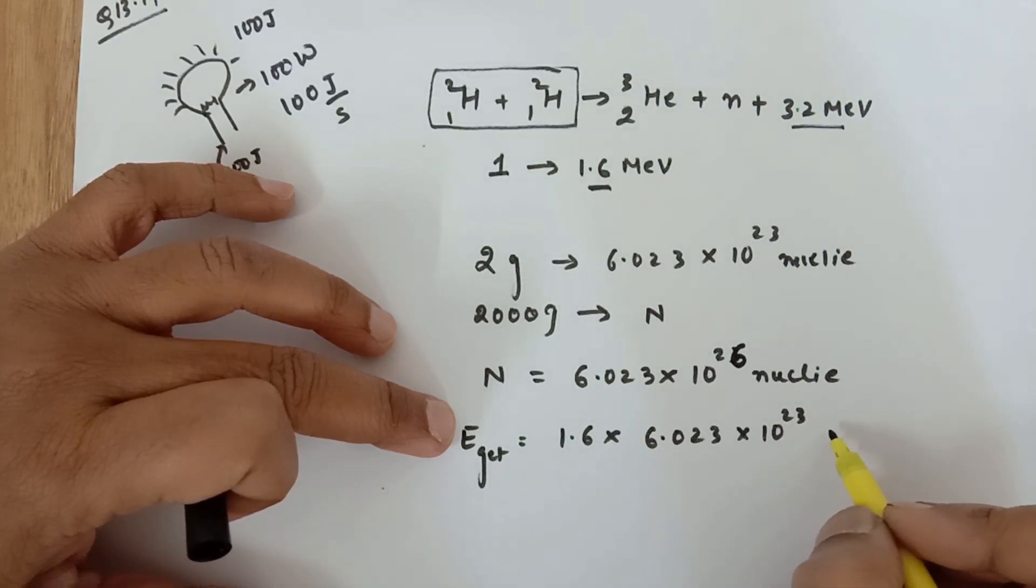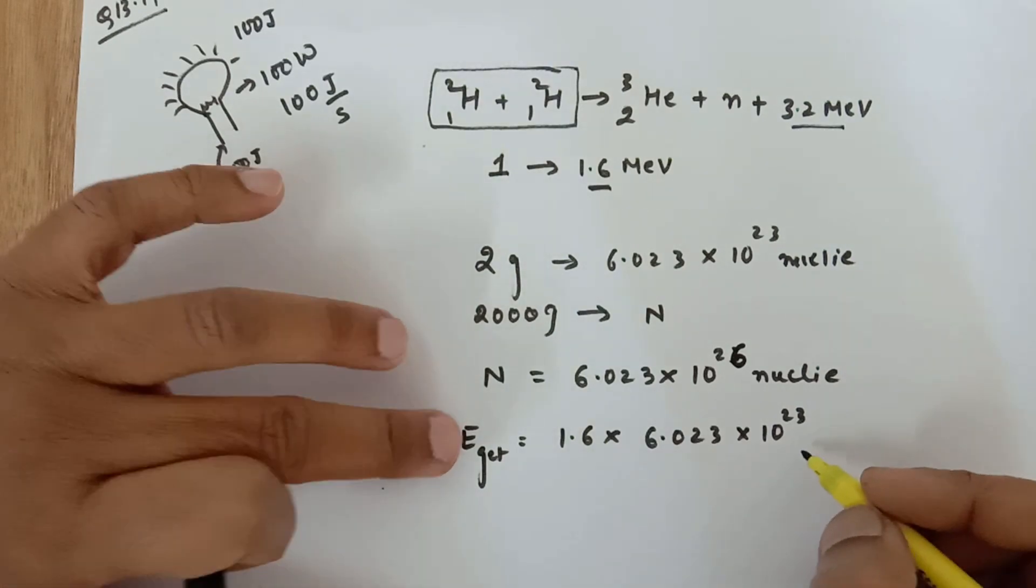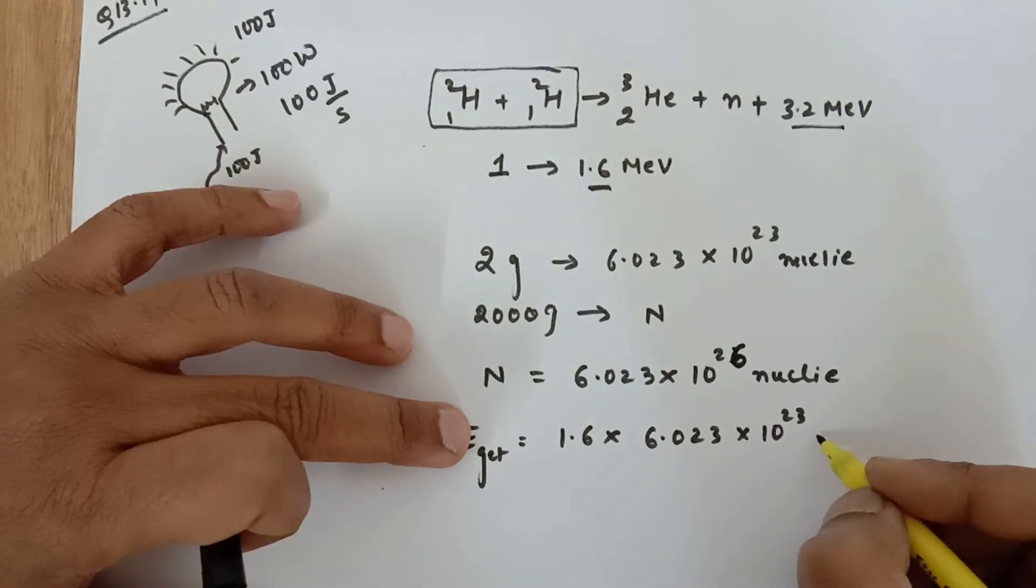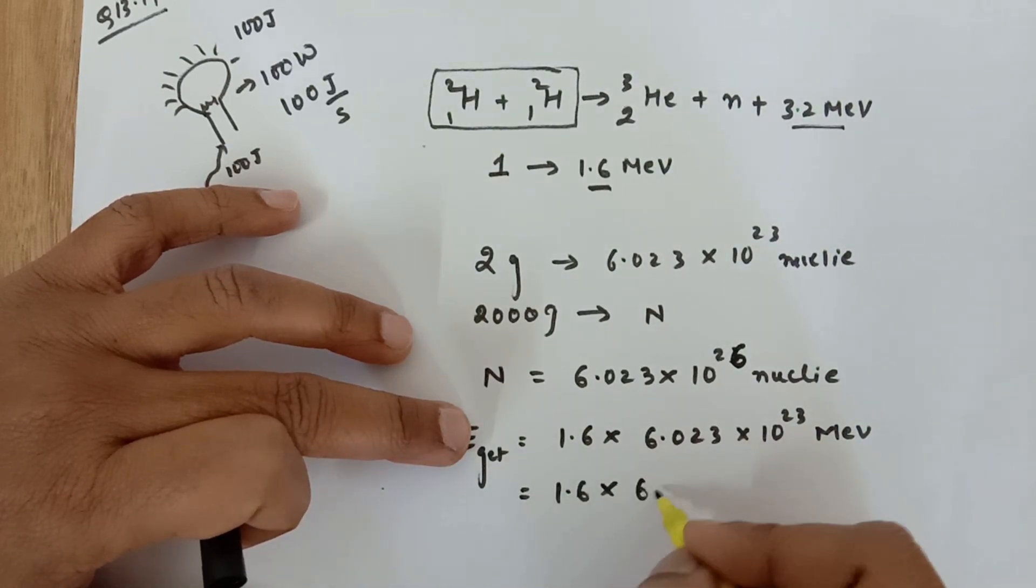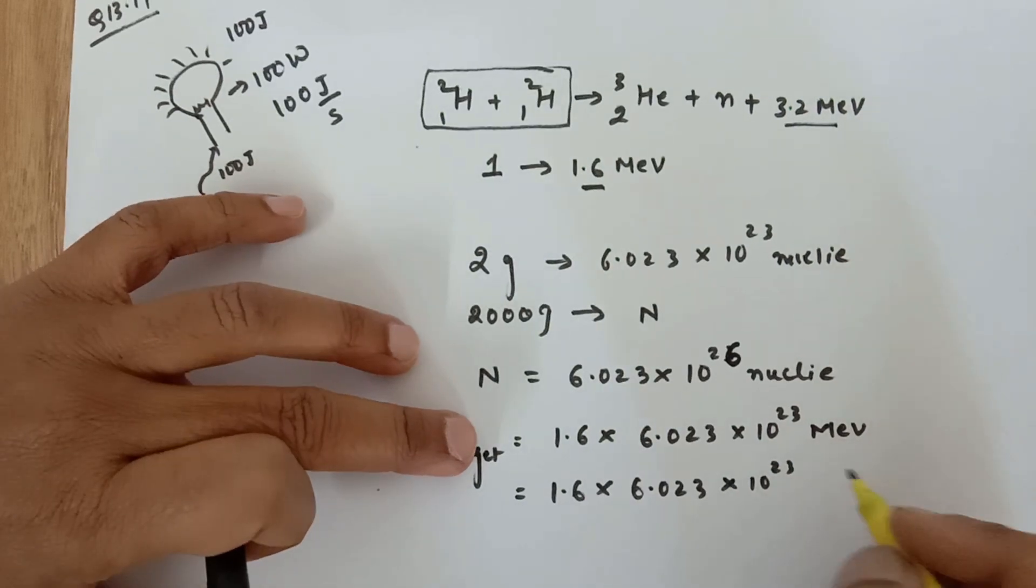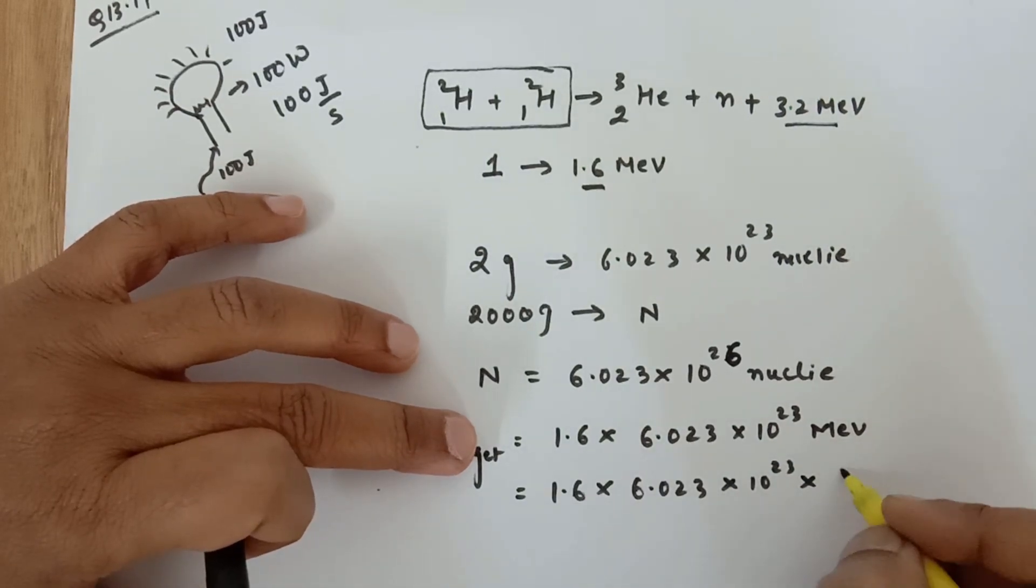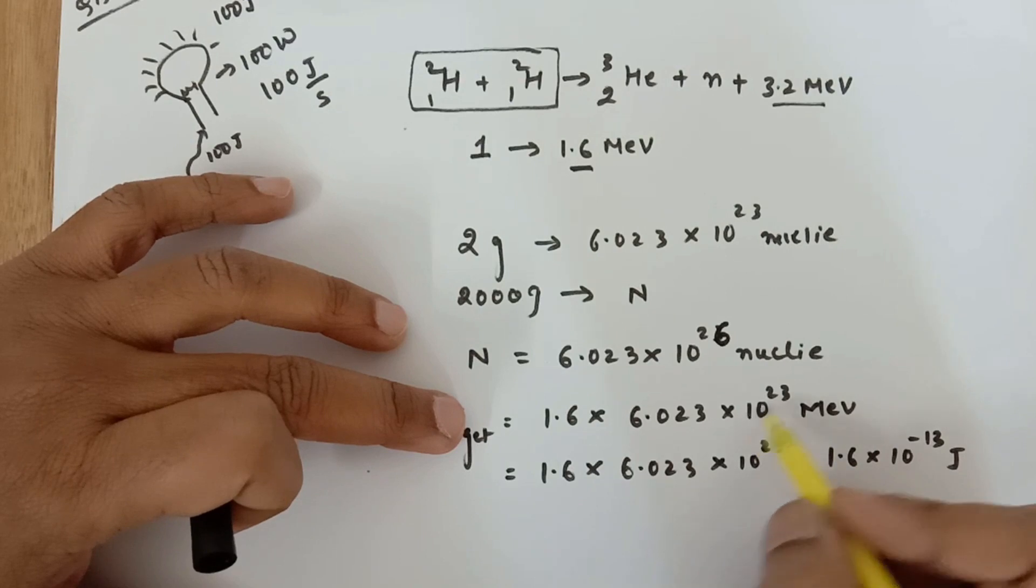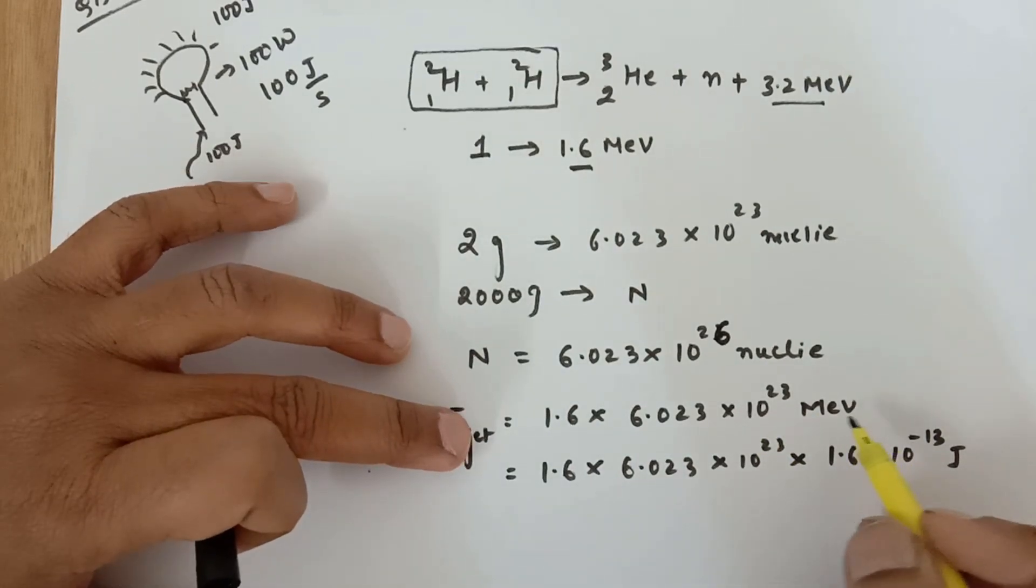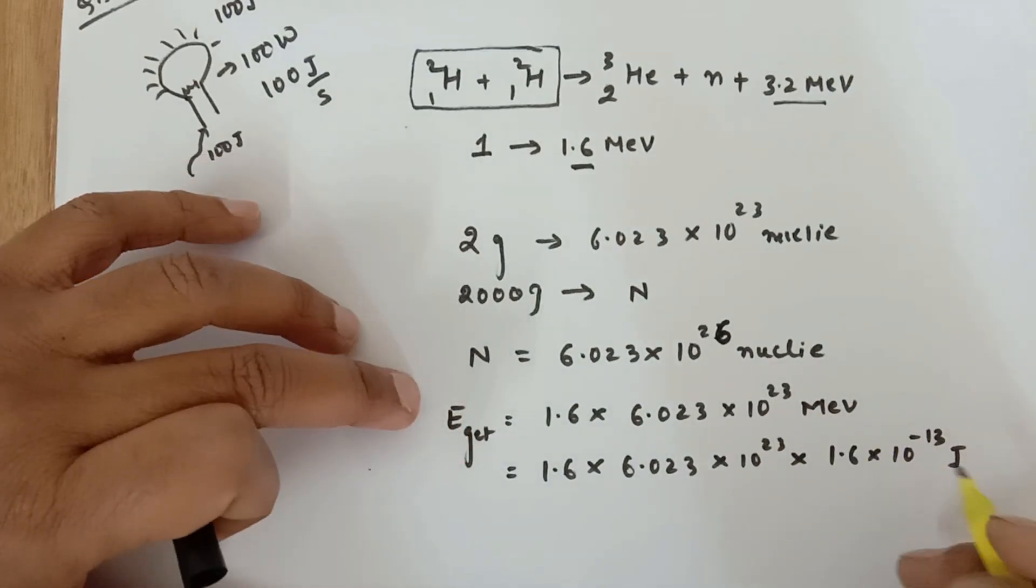This answer is going to come in MeV. Now if we want to convert that MeV into joules, we know 1 MeV is 1.6×10^-13 joules of energy, because 10^-16 is only electron volt; this is million electron volt.